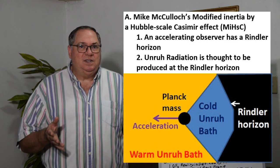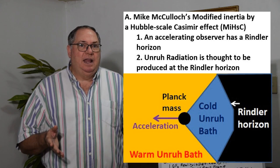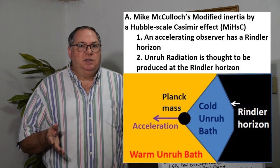What the theory proposes is that at the Rindler horizon, you would get light being emitted the same way you get Hawking radiation emitted at the event horizon of a black hole.